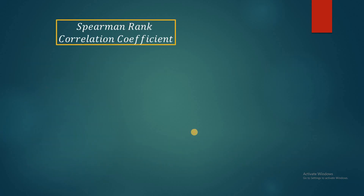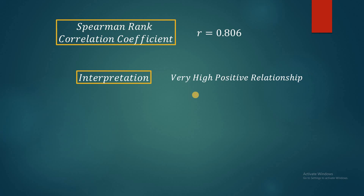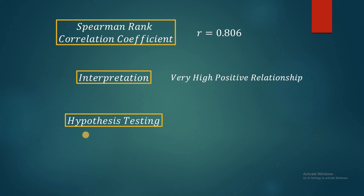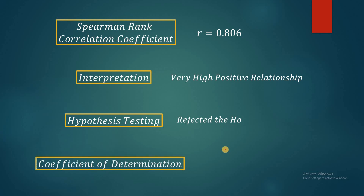In summary, what we did in this video: first, we computed the Spearman rank correlation coefficient and got 0.806, interpreted as very high positive relationship. Next, we tested significance through hypothesis testing — in step 5 we rejected the null hypothesis and accepted the alternative, confirming a significant relationship between job performance and CPA board rating. Finally, using the coefficient of determination, 65% of the job performance is directly related to the CPA board rating. That's all about predictive validity and criterion validity. If this video was helpful, please like and subscribe. Thank you for watching.